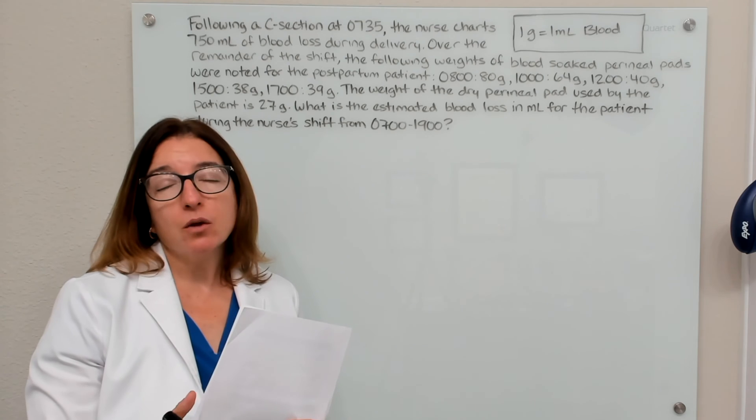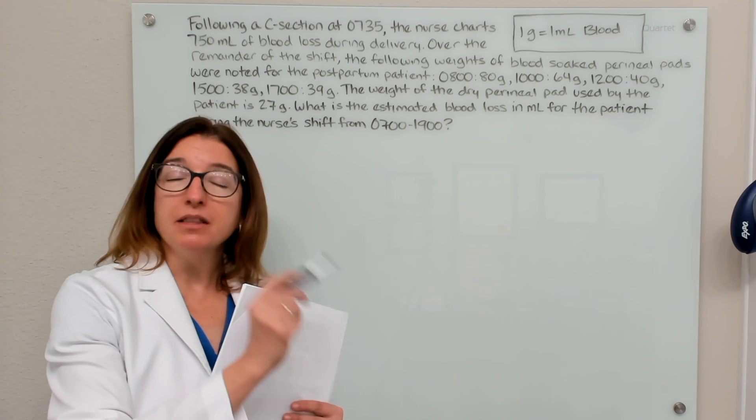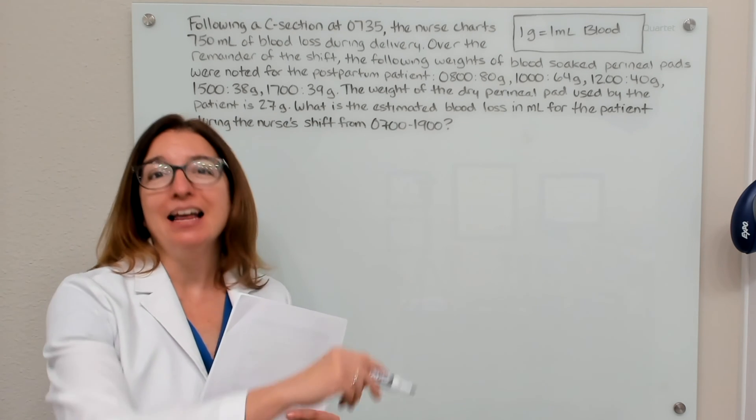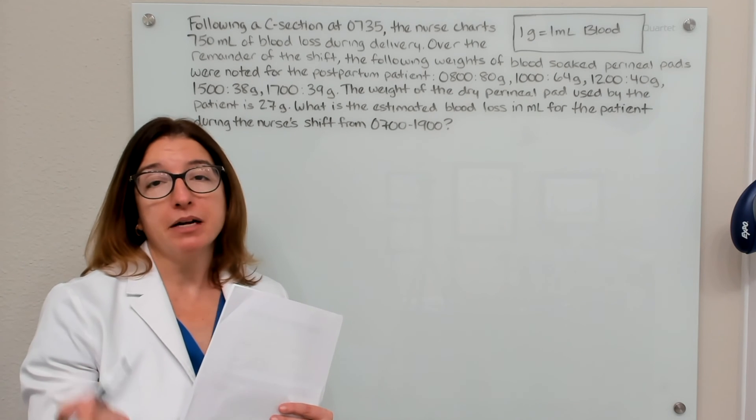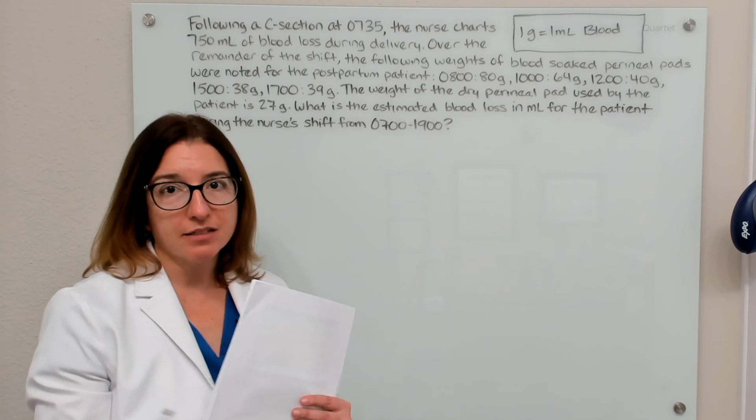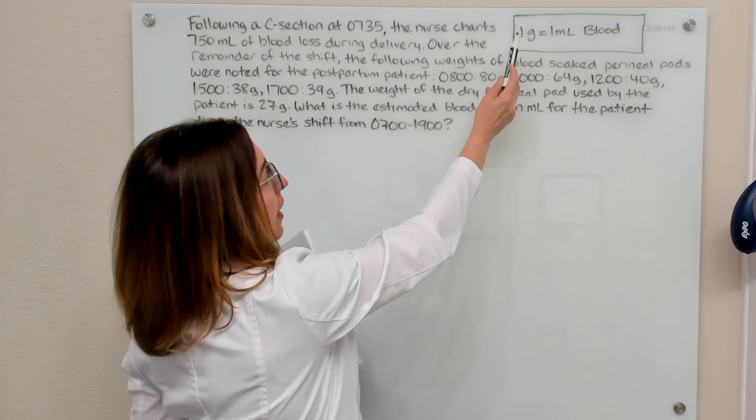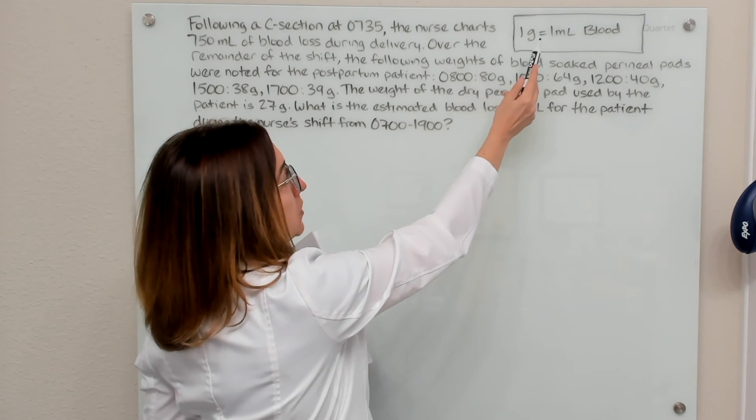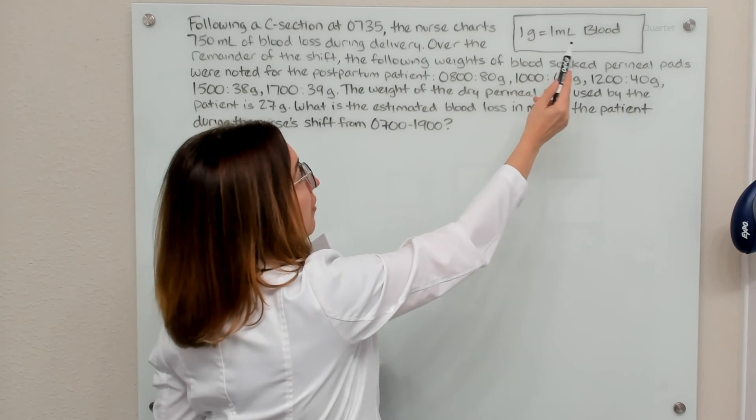So if you take the weight of the blood-soaked perineal pad and subtract out the weight of the dry perineal pad, you will get the grams of blood loss. And then you need to remember that one gram equals one milliliter of blood.